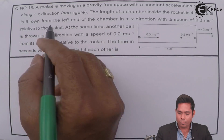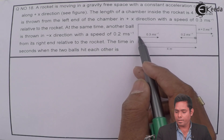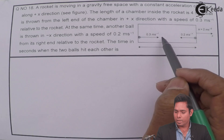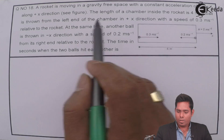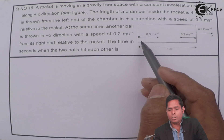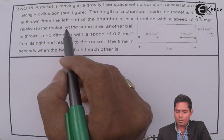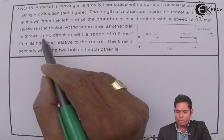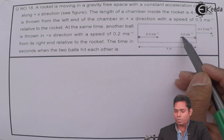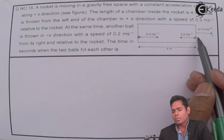A ball is thrown from the left end of the chamber in the positive x direction with a speed of 0.3 meter per second relative to the rocket. At the same time, another ball is thrown in the negative x direction with a speed of 0.2 meter per second from the right end, also relative to the rocket.